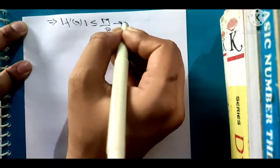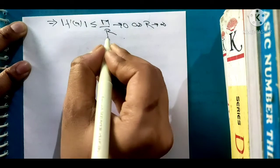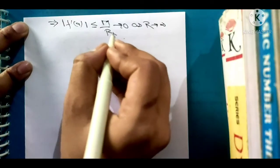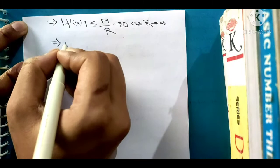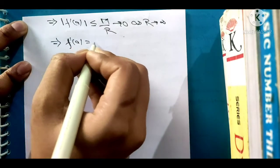M by R tends to 0 as R tends to infinity. If R is tending to infinity then this quantity will be tending to 0. This implies f'(a) equals 0.